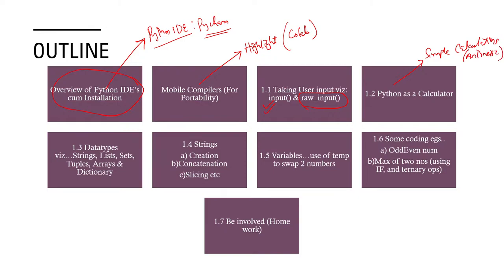We'll look at data types with emphasis on strings today, since I may not be able to cover lists, dictionaries, and arrays in just today's class. Next we'll look at strings — creation, concatenation, and especially slicing. We'll do some hands-on coding exercises, especially the concept of swapping numbers without a third variable and using a third variable. Then we'll get into some assignments before we conclude.